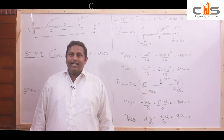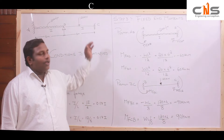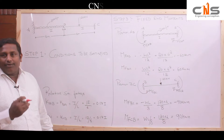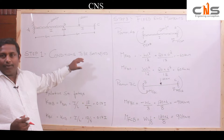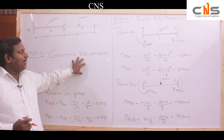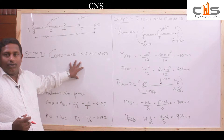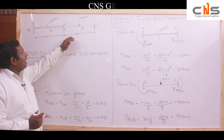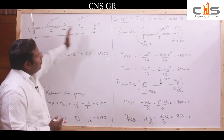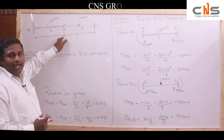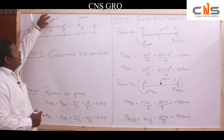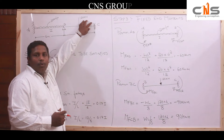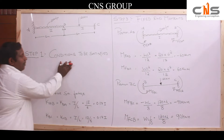Hi everyone, welcome to CNS Group of Company. Today we will start solving problems using the SDM method. As discussed in previous videos, we covered basic formulas like FEM, simply supported beam standard formulas for maximum bending moments and rotation. In the last video we derived slope deflection equations. We will take a simple continuous beam where support A and support C are fixed, with an intermediate hinge support B. For portion AB there is a UDL of 20 kilonewton per meter, and for BC there is a central point load of 120 kilonewton.